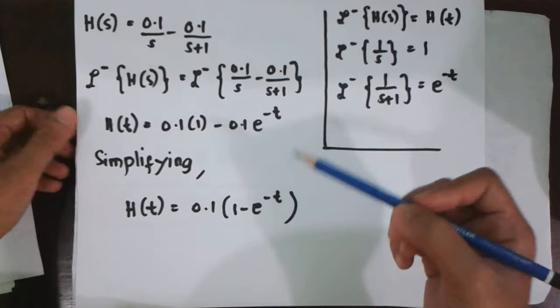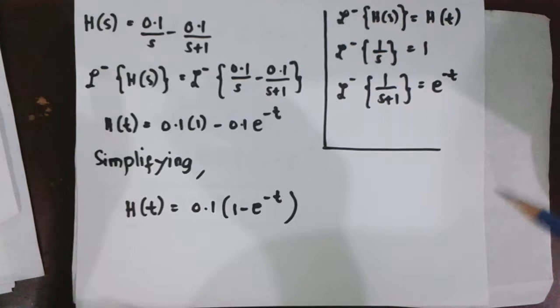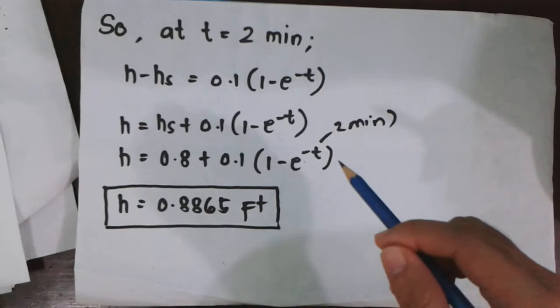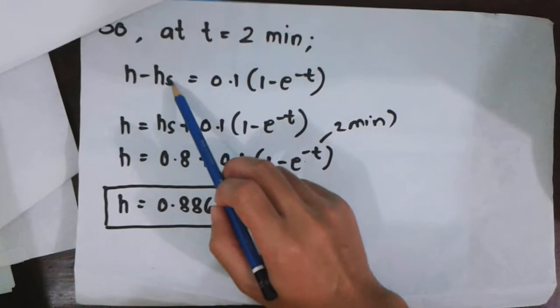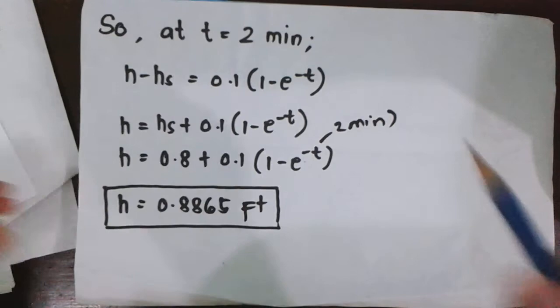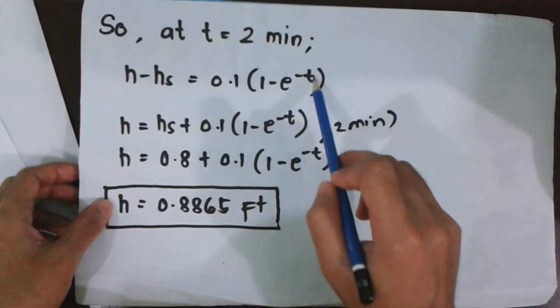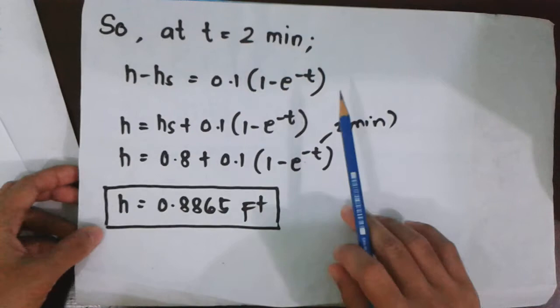This is the response to the step change of Q(t) equal to 0.2 times Uo(t) applied to the system. The question is, what is the level at time 2 minutes after the changes occur? Since we know that the deviation variable H̄ is equal to H minus H(s), we equate: H minus H(s) is equal to 0.01 times (1 minus E to the negative t). Transposing Hs, we arrive at this equation.